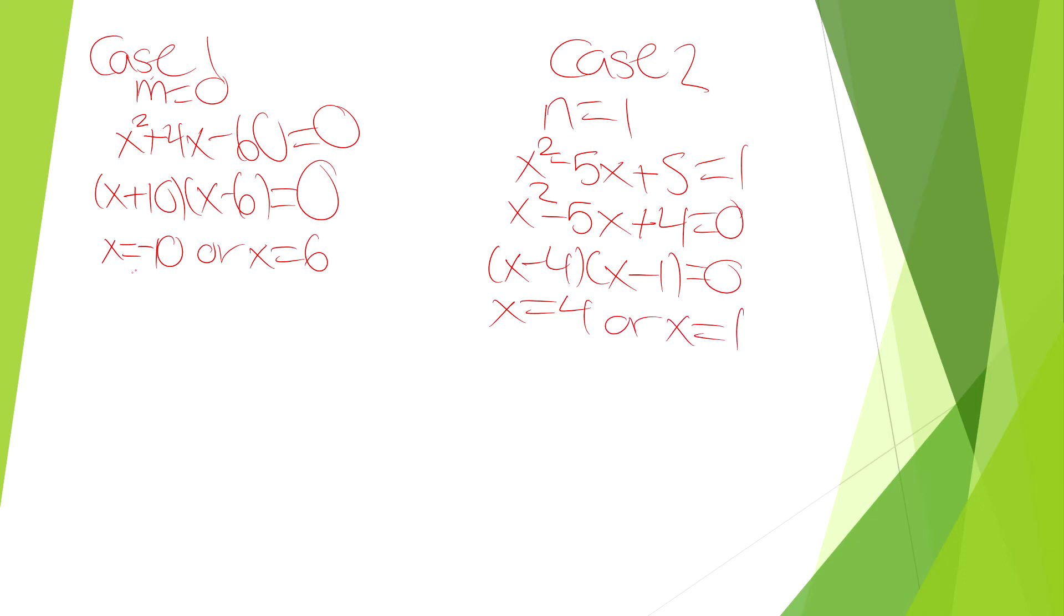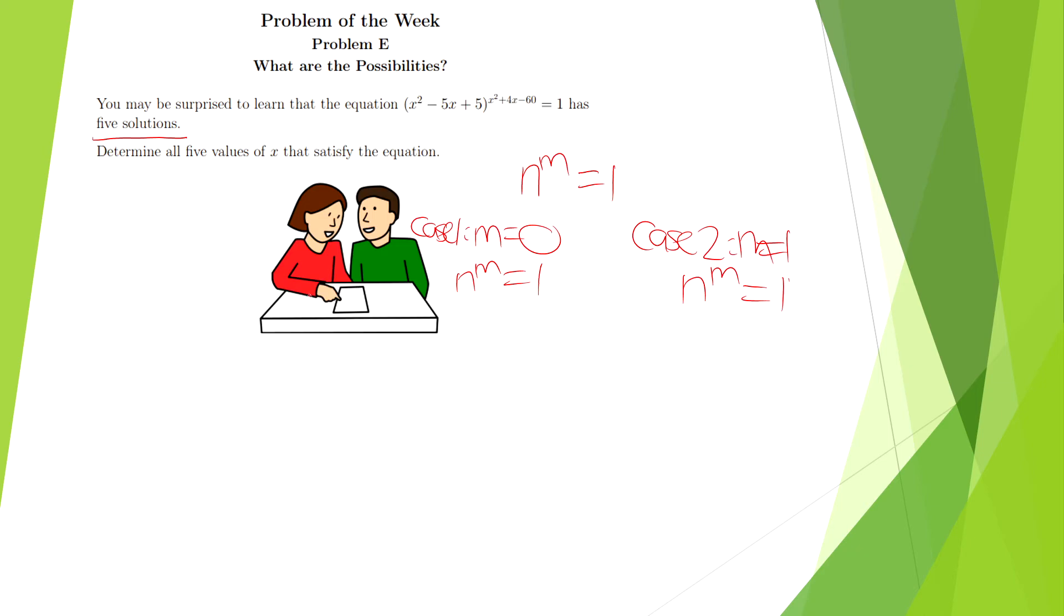So here we have four solutions for x. How do we come up with the last solution for x? Now you have to think a bit more because I feel like the first two cases are a lot more obvious than the last case.